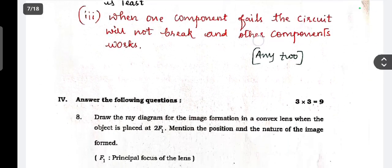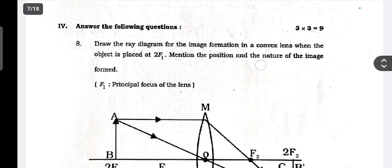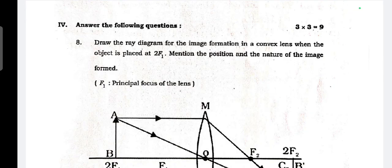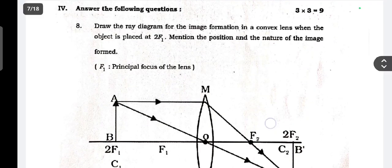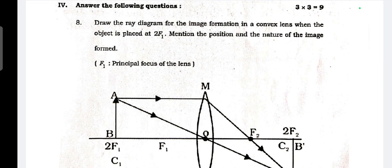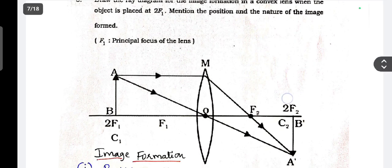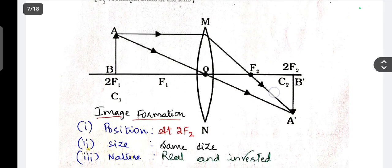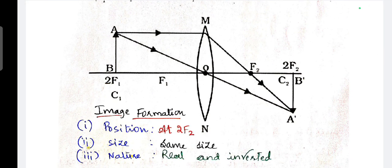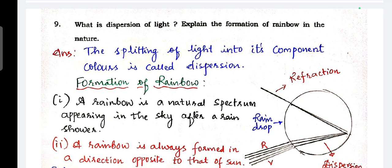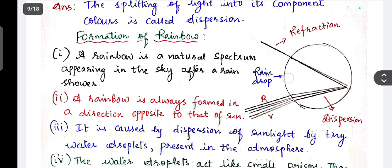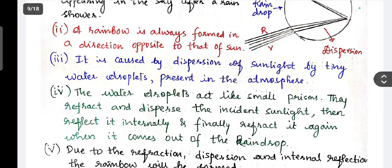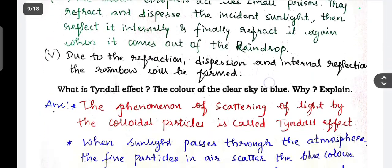Next question, three mark questions - three questions will be there, each carries three marks. Draw a ray diagram for the image formation in a convex lens when an object is placed to F1. Mention the position and nature of the image. This is the answer. Image formed position is at 2F2 and size is same size, nature is real and inverted. That's what you have to write. Question number nine, what is dispersion of light? Explain the formation of rainbow in the nature. So this is the answer. For three marks, write point-wise, each point carries half marks. Next, what is Tyndall effect? The color of the clear sky is blue, why? Here I'm not reading answers because video will become longer. If you want answer, take screenshot.